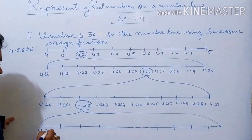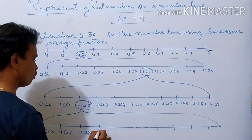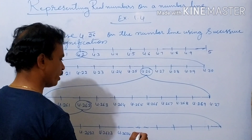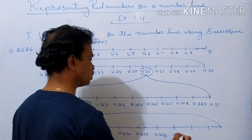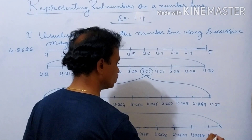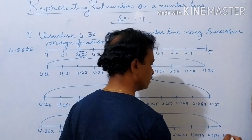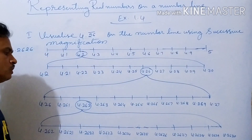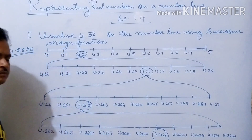4.262, 4.2621, 4.2622, 4.2623, 4.2624, 4.2625, 4.2626, 4.2627, 4.2628, 4.2629, then 4.263. So 4.2626 is located on the number line.